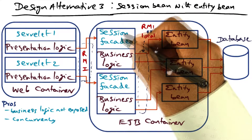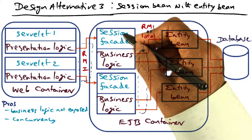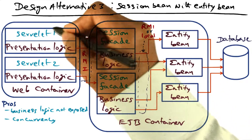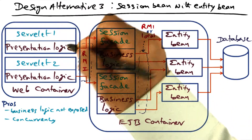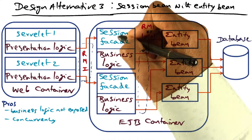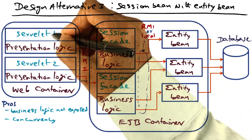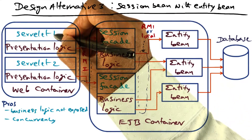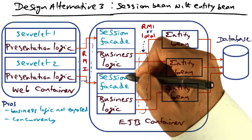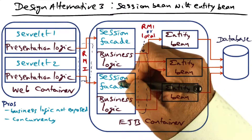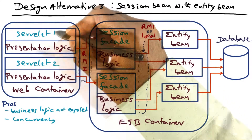It's a design pattern that allows you to construct a session and associate it with a particular client. So for instance, in this case, this session facade corresponds to servlet one, which corresponds to the client that it is serving. Similarly, this session facade is serving client number two.